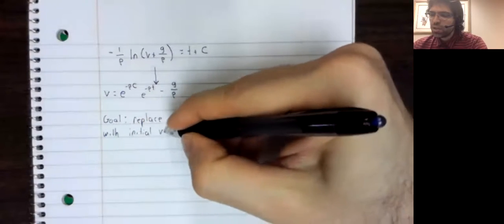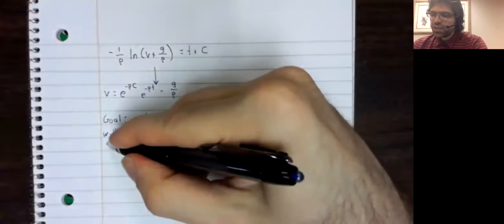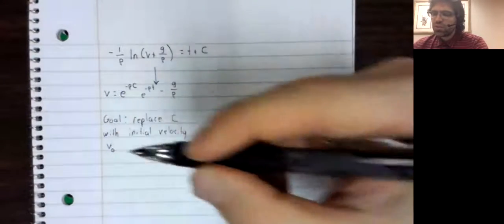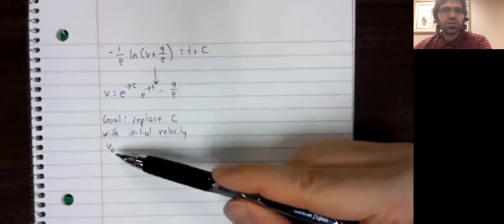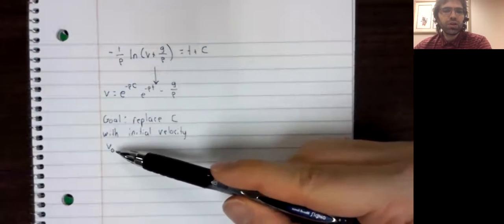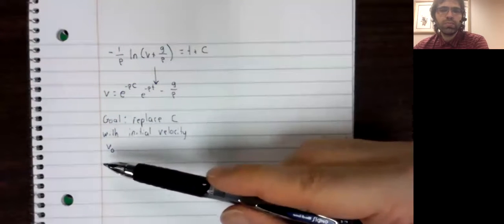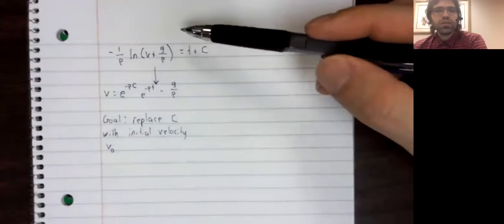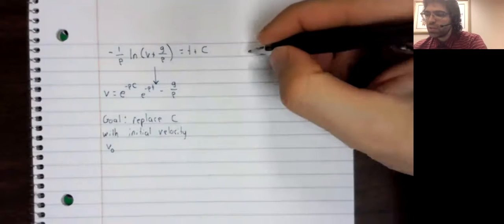In particular, let's get it so that this velocity equation is in terms of the initial velocity V sub zero. And to do that, we'll work with this again for a bit.